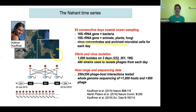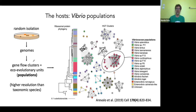She used those Vibrio isolates as bait to isolate coexisting phages, then did a fully resolved cross-infection matrix, which we then fully genome-sequenced. To my knowledge, this remains the largest fully genome-resolved cross-infection matrix for bacteria and their viruses to date.